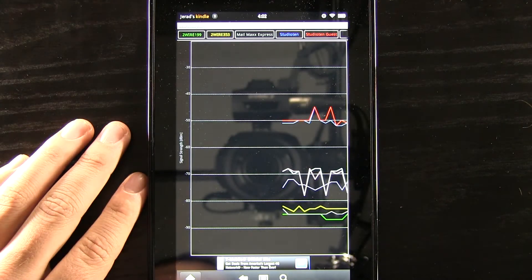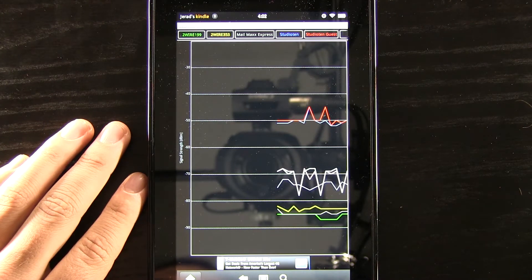So I'm going to go ahead and view time graph, which is going to show us a different view and show how this signal strength has been over time since the app has been running.